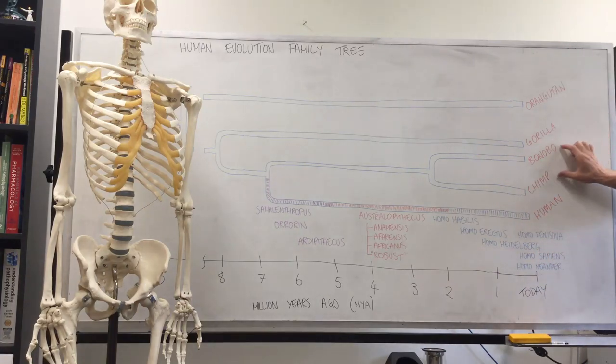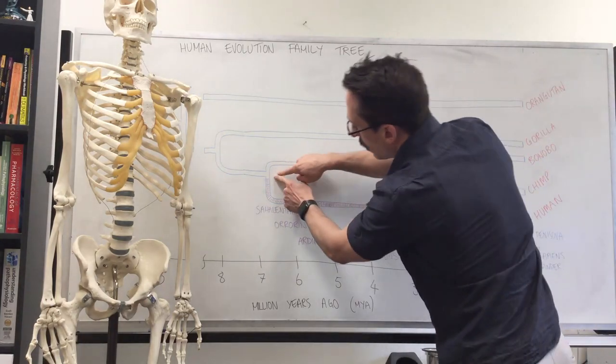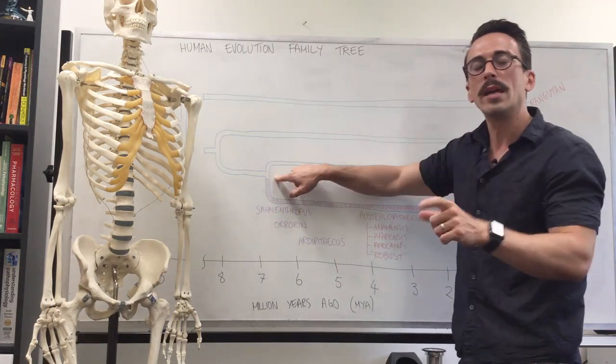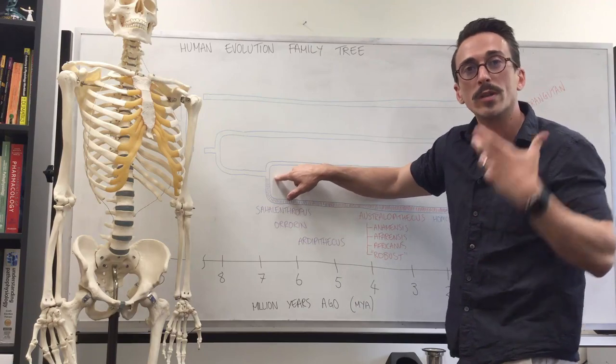And if we were to follow back the bonobos, chimpanzees, and humans all the way back, we find that at around about seven million years, we humans had a common ancestor with chimps and bonobos.